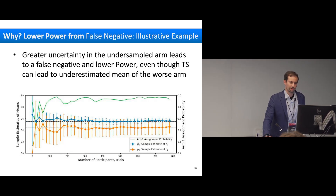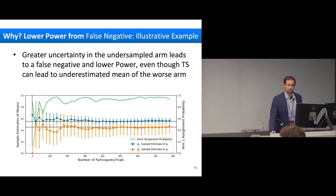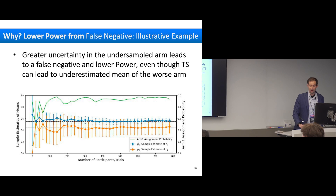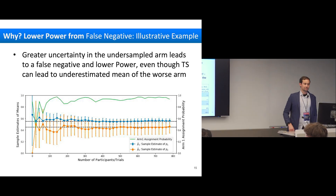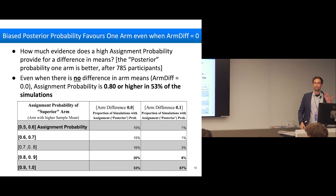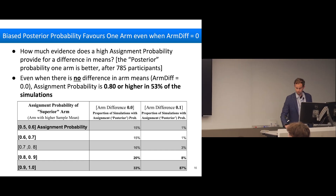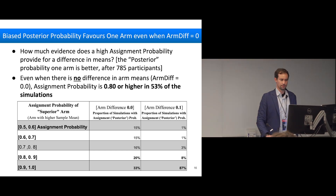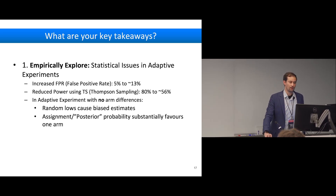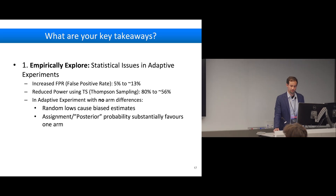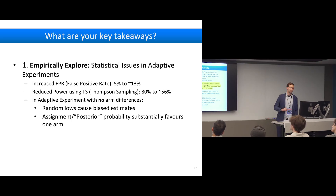Lower power arises because even when one arm truly is better, assigning more people to it doesn't give strong evidence for a difference — you can't distinguish whether you're in a false-positive world or a true-positive one. Thompson sampling produces biased posterior probability estimates that favor one arm even when there is no difference. The key takeaway is that statistics and ML must work together to support adaptive experiments: FPR is inflated, power is reduced, and random luck produces biased estimates.